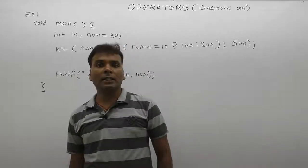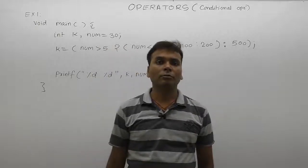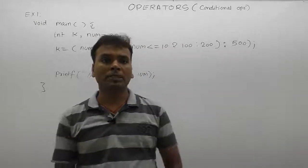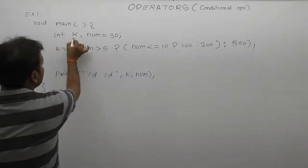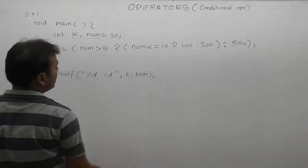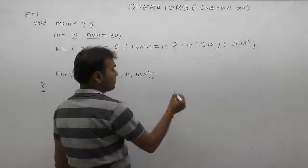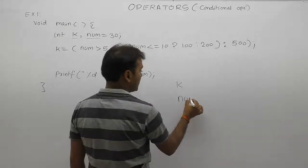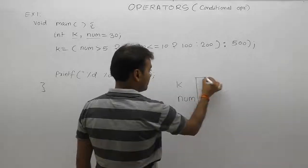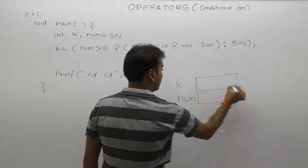Let's see the first example regarding conditional operators to test different flavors of conditional operators. In that case, two variables are declared: variable k and num. The initial value of k is garbage and the initial value of num is 30.